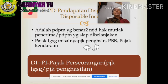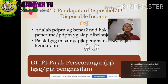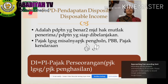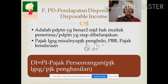Yang terakhir adalah PD, Pendapatan Disposable, atau Disposable Income (DI). Rumusnya adalah PI dikurangi pajak perseorangan. Pajak perseorangan adalah pajak langsung atau pajak perseorangan.